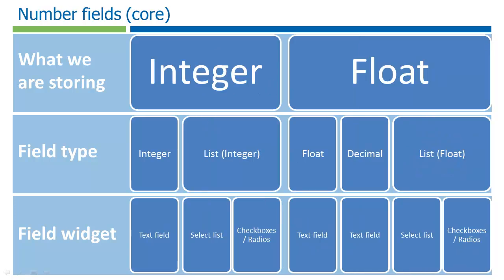Number fields provide a way of entering numeric data. This is particularly useful for any data that we might want to do math on or put numeric parameters around, such as a minimum or maximum amount. There are actually five types of numeric fields: Integers and lists of subtype integers, which are used to store whole numbers, and floats, decimals, and lists of subtype floats for storing numbers with decimal values.